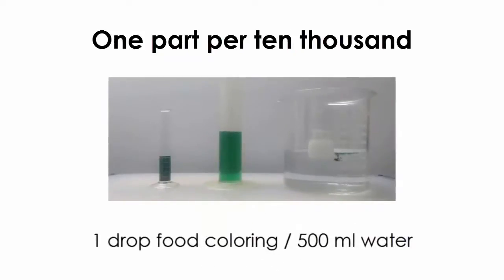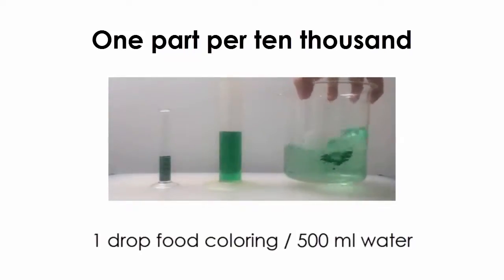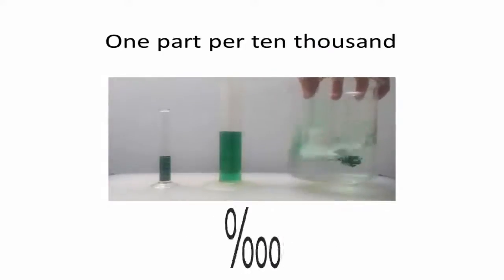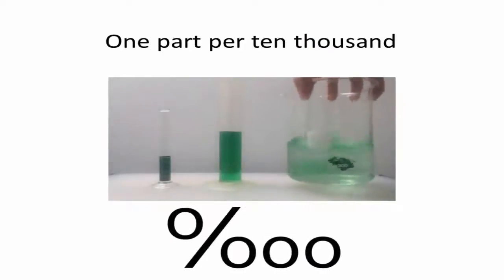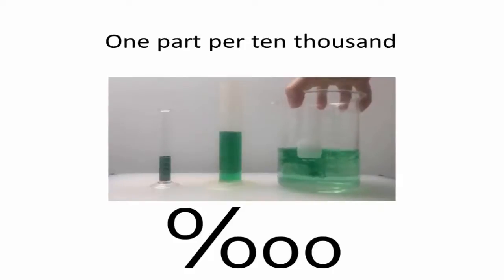Parts per 10,000 is the equivalent of one drop in 500 milliliters, and its symbol is the same as percent but with two extra zeros. Parts per 10,000 is used for things like measuring the amount of carbon dioxide in a well-ventilated room.